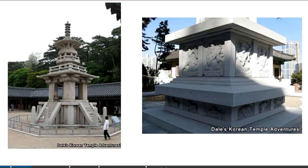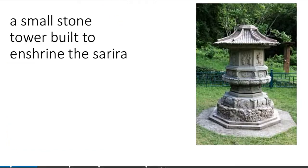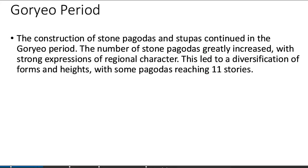It is almost seemingly the same style of architecture between Korean and Japanese, but according to experts, Korean architecture existed first — ahead of time — than Japanese. A small stone tower built to enshrine the Sarira, called a garden lantern in Japan. The construction of stone pagodas and stupas continued, greatly increasing in number with strong expressions of original character, leading to diversification of forms and heights, with some pagodas reaching 11 stories.